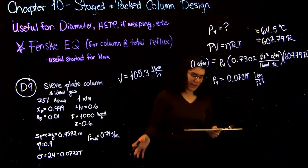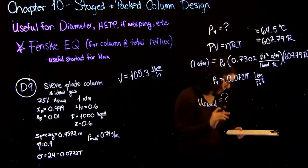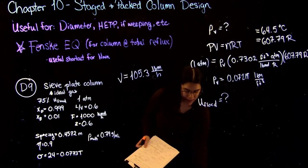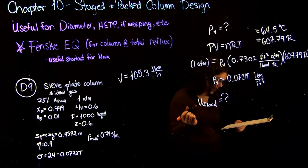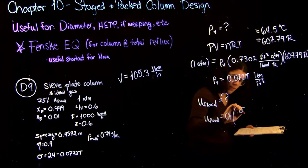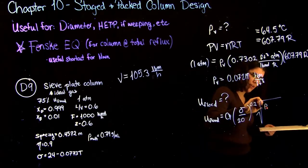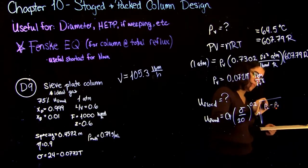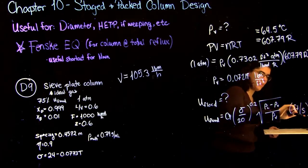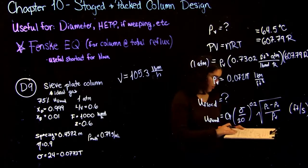So now we have everything we need in terms of the vapor. The last thing we're missing, however, is we have to find u_flood. So that's our flooding velocity. So if you go to your textbook, and I'll show you a picture in this video too, there's an equation as well as a graph that you can use. So the equation, I'll write it down, u_flood is equal to C_b times your surface tension over 20 to the power of 0.2 times the square root of density of your liquid minus density of vapor over density of vapor. And this will give you your flooding velocity in feet per second. You can tell by the weird exponent that this is a correlation. So again, we have to be really careful about our units because it will only work with imperial units.